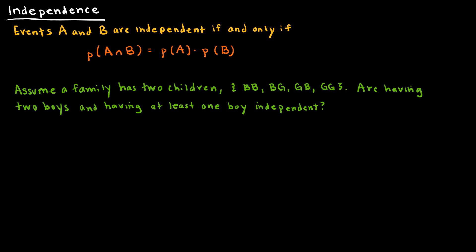Independence is one that we have not talked about yet. Independence is just a way for us to know if the outcomes of one event affect another event. The way that we can formalize that definition is to say that the probability of A intersect B must be the probability of A times the probability of B. Let's take a look at an example. Assume a family has two children: boy-boy, boy-girl, girl-boy, girl-girl. Are having two boys and having at least one boy independent?